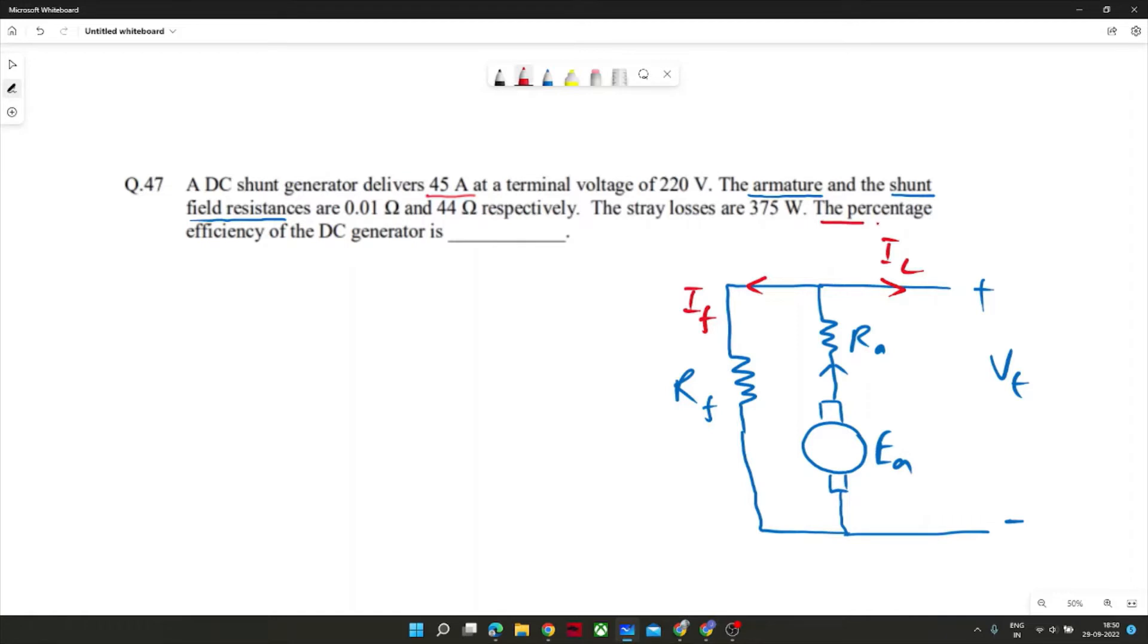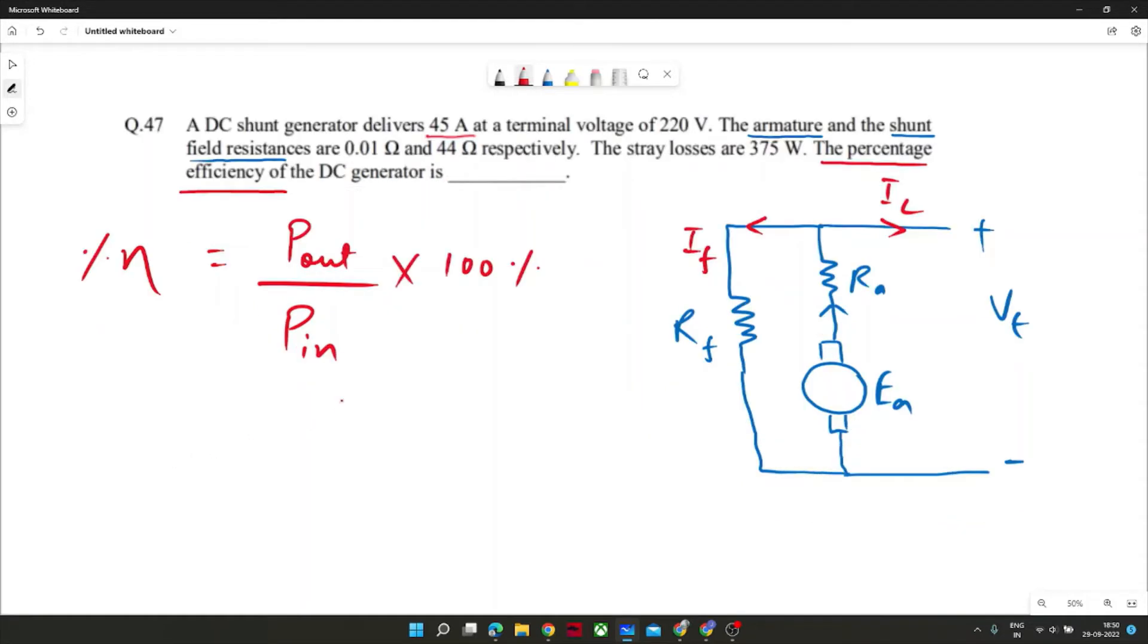So we need to calculate the percentage efficiency. Efficiency we know is P out by P in into 100 percent. Now we know that terminal voltage is Vt. If we calculate Il, then we will know what is our output power. And this 45 ampere is given, it is delivering at terminal only. So Il is 45 given, so we know output power.